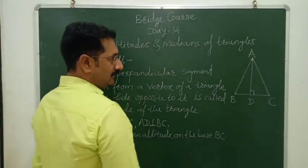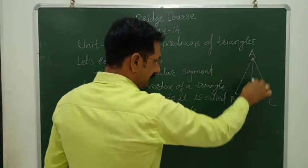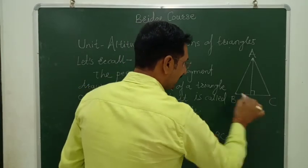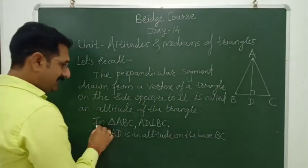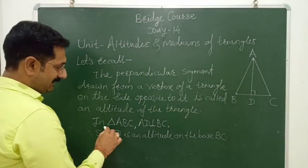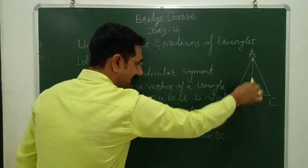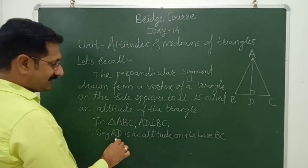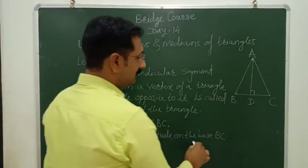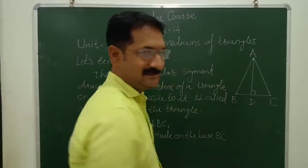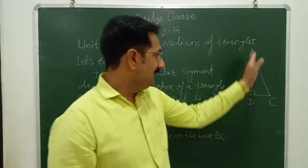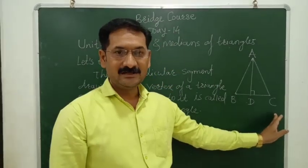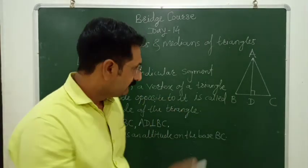So in triangle ABC, this is the perpendicular drawn from vertex A on its opposite side BC. In triangle ABC, AD is perpendicular to side BC. Therefore, segment AD is an altitude on the base BC. So segment AD is the altitude on side BC — that is what we need to note.